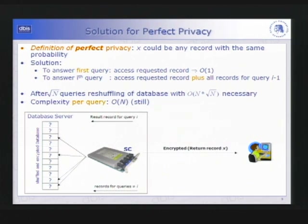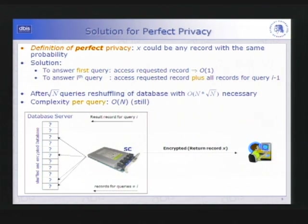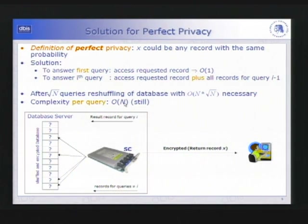For a million tuples, the square root is a thousand — still a big number. But if you look carefully, we haven't changed much from the n-squared algorithm — we've only shifted the work around. The shuffling and encryption is done in n times square root of n, and the access is now independent. But on a per-query basis, after n times square root of n queries you reshuffle, so the complexity is still O(n) per query. It's still not very good. So the question is: what can you do about it?